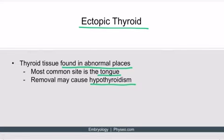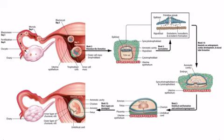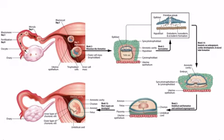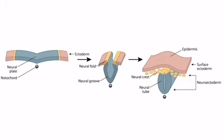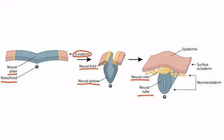Now let's discuss pituitary gland embryology. Going back to the embryo overview, focus on the notochord in the center. The notochord leads to neurulation, which leads to formation of the neural tube. The notochord is visible here, with the ectoderm forming the neural plate. The inner portion folds in, forming neural folds and a neural groove, ultimately producing the neural tube and neural crest cells — together considered neuroectoderm. What remains is the surface ectoderm, essentially the epidermis. It is the neuroectoderm that gives rise to the posterior pituitary gland.